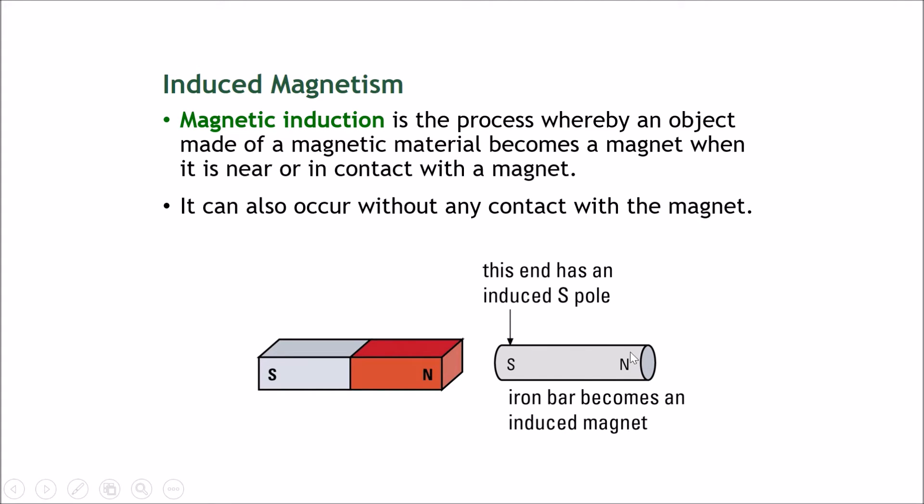And this south pole actually makes this end of the iron bar into a north pole. Therefore, you can see that this magnet has made this iron bar into another complete magnet. This is called an induced magnet.